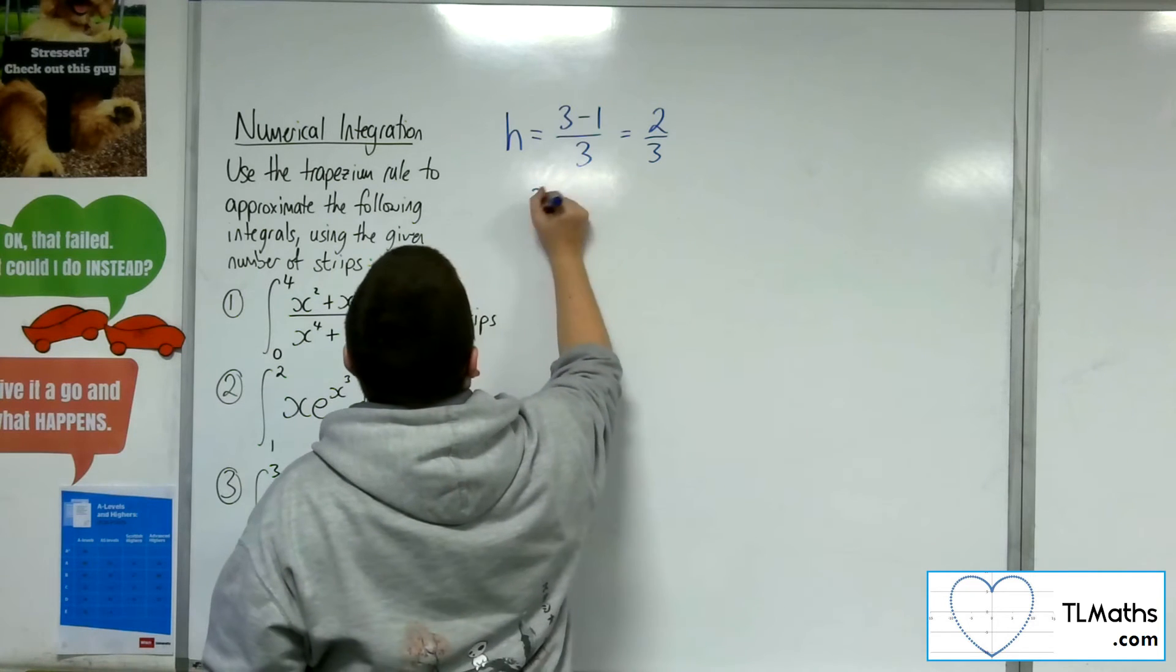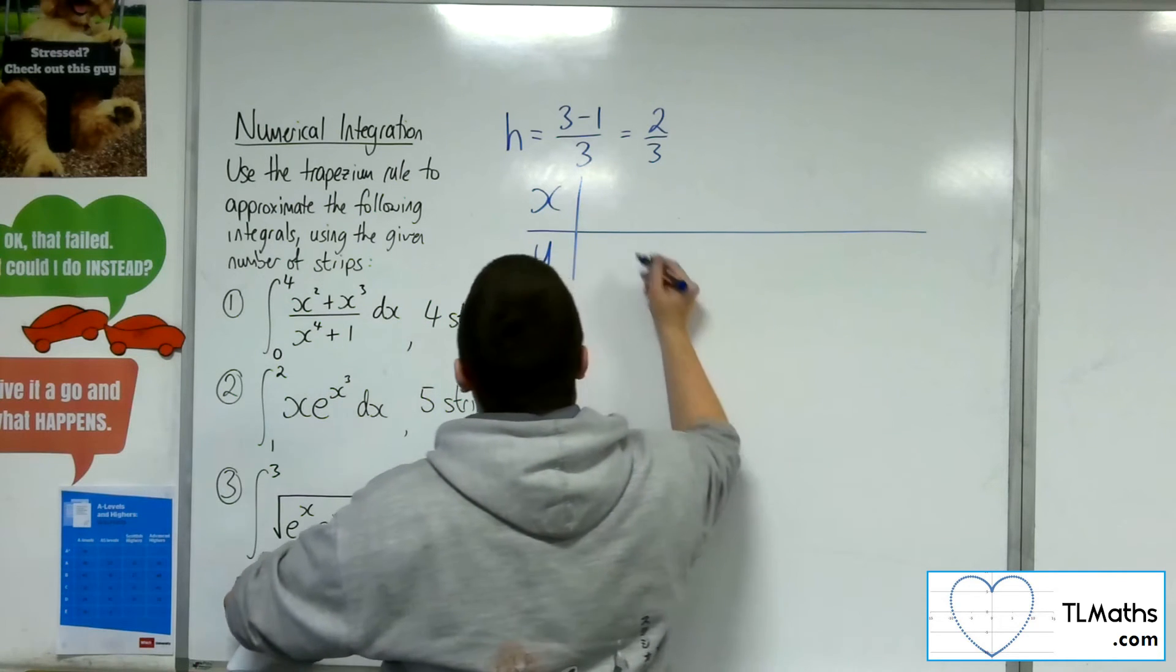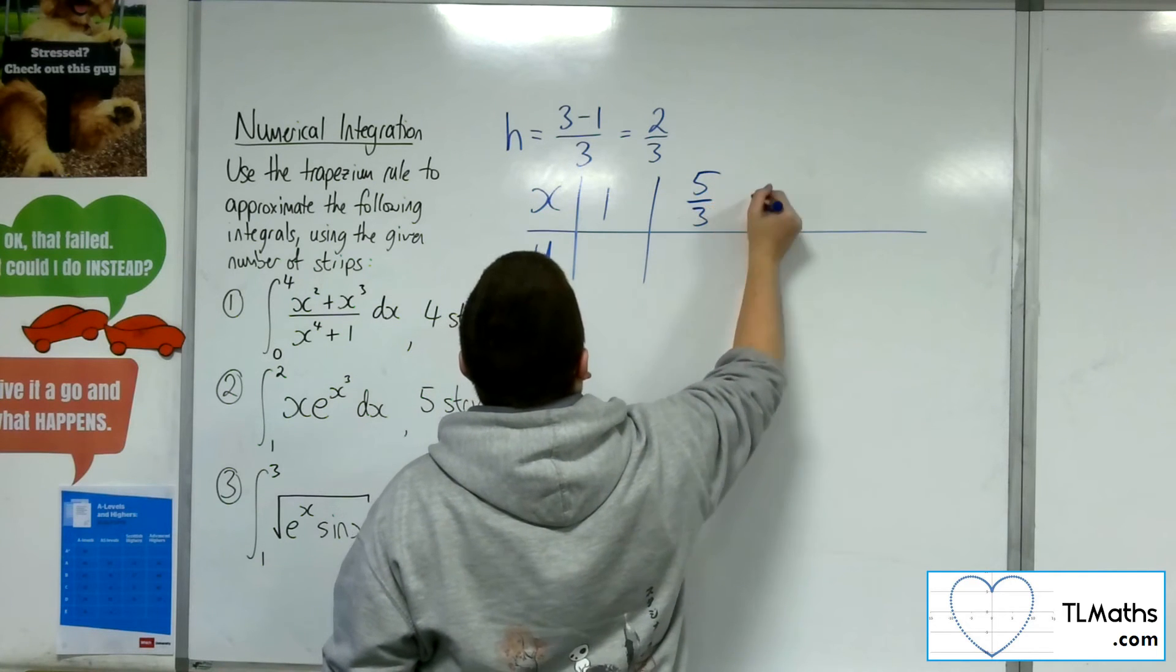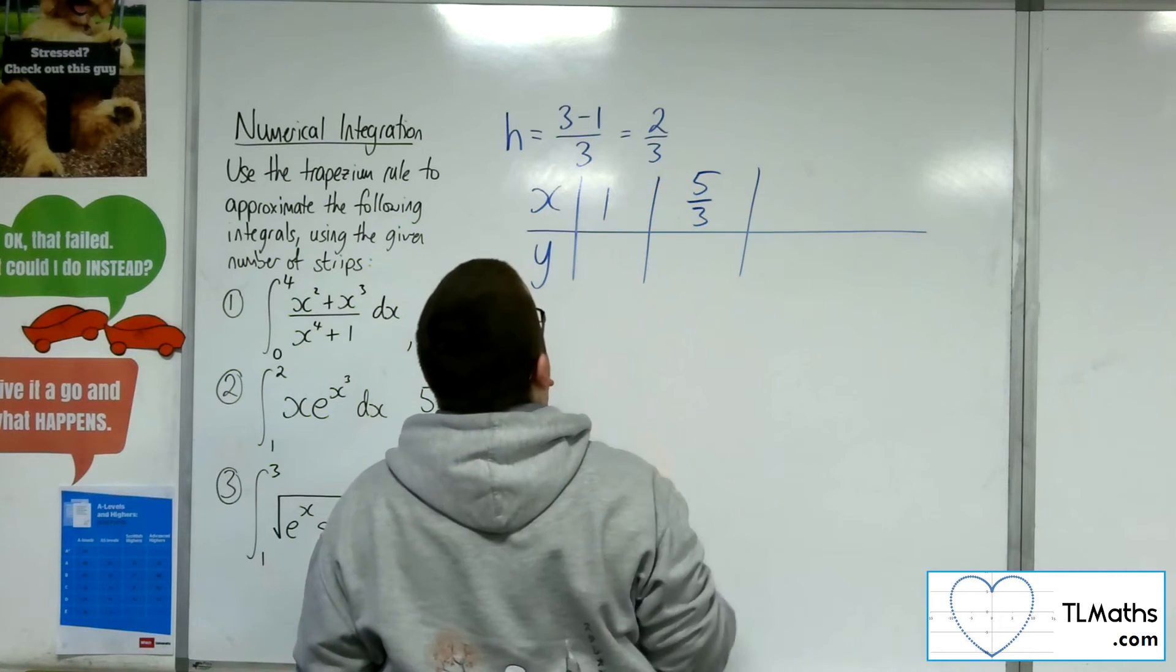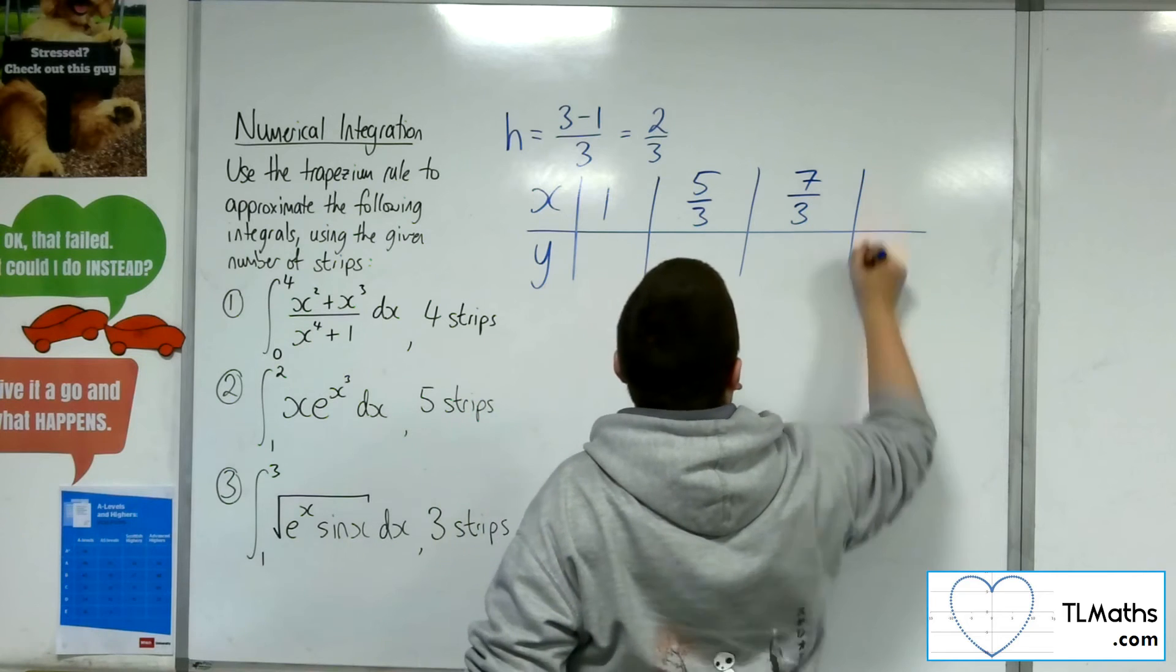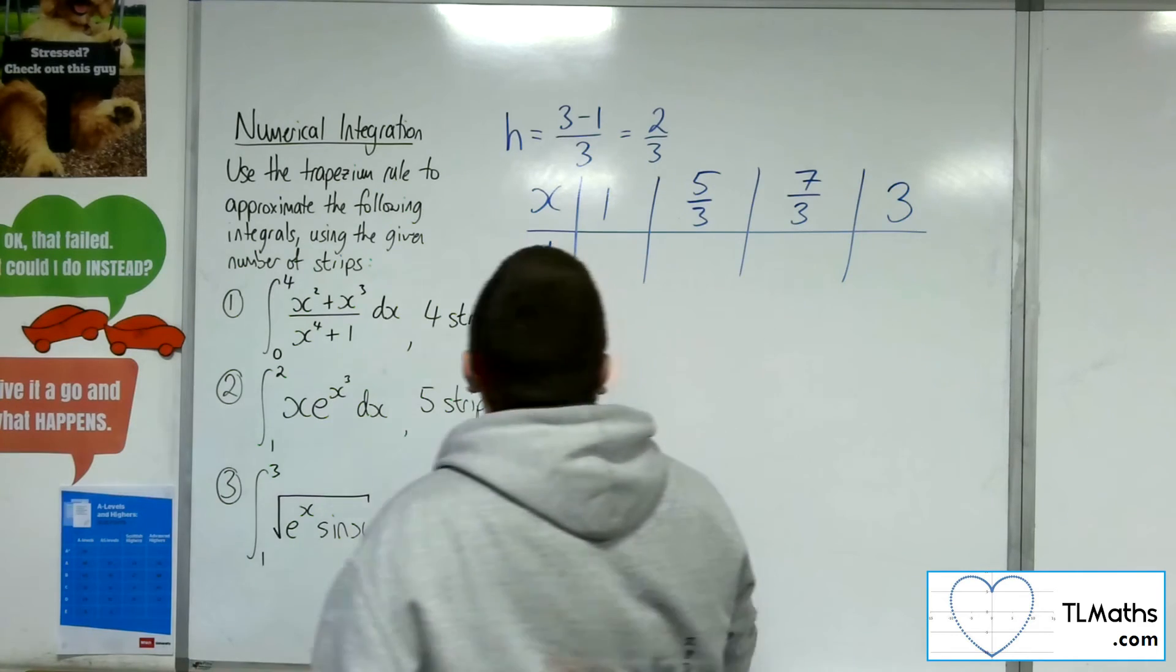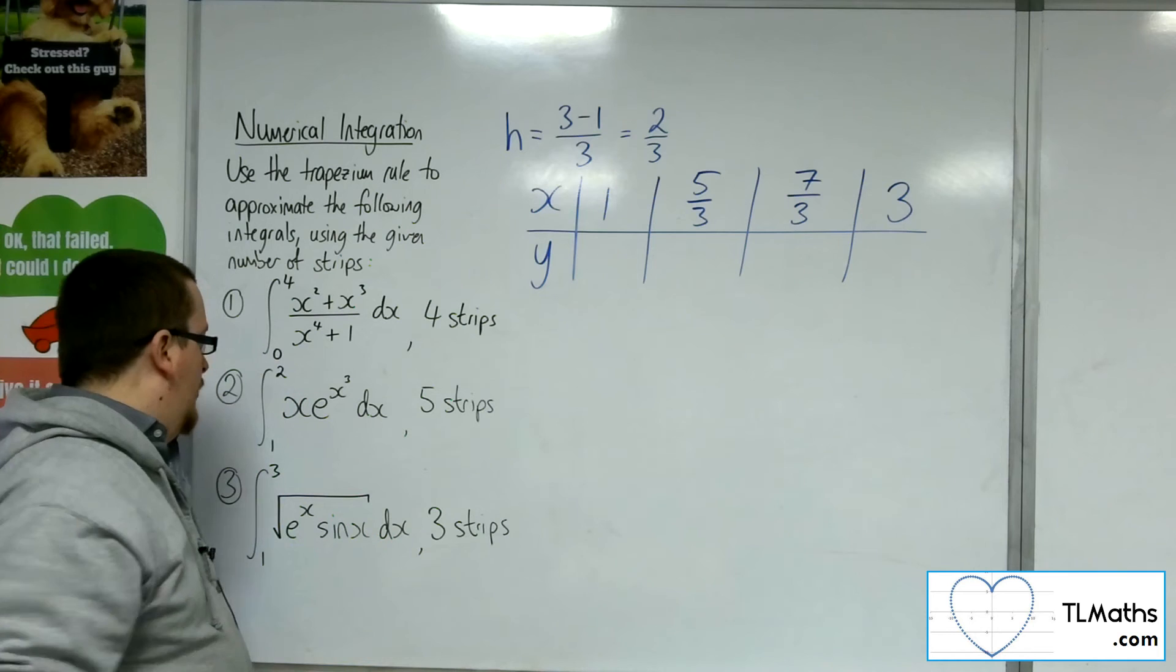So, table of results. So starting off from 1. So 1 is 3 thirds. So the next one will be 5 thirds. Add on another 2 thirds. We're going to get 7 thirds. And then add on another 2 thirds, you're going to get 9 thirds, which is the 3.